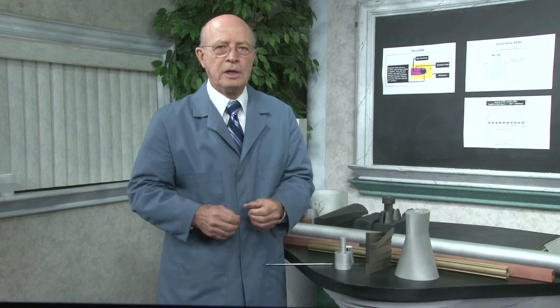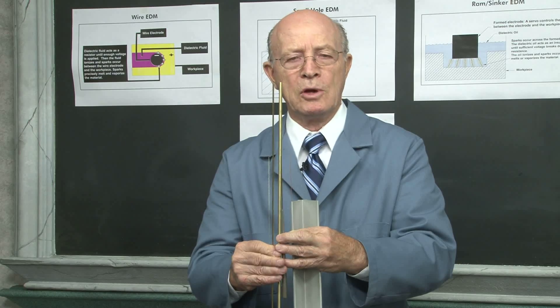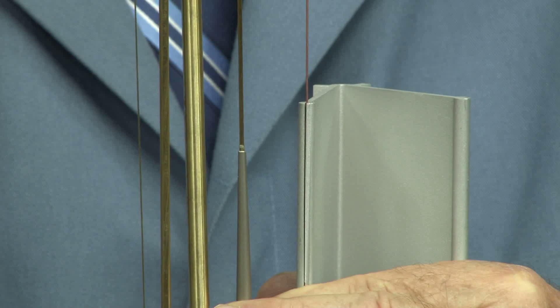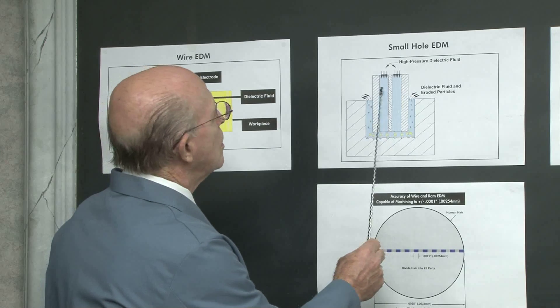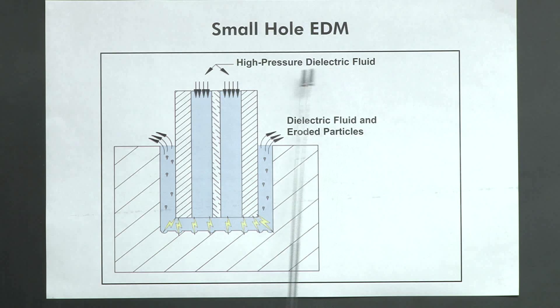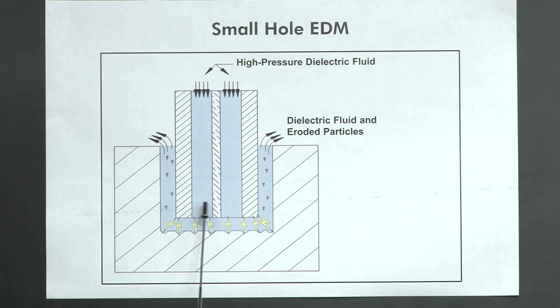Now let's examine small hole EDM. Here are some parts that were EDM'd with a small hole EDM machine, and some electrodes. Here's the electrode, and this is the workpiece. The high-pressure dielectric fluid goes through the center of the electrode. And sparking occurs, eroding part of the workpiece and the electrode. And the dielectric fluid and eroded particles are forced out. The electrode never touches the workpiece. It's just a spark erosion. And because of that, we can go on a curved surface or even on a point.